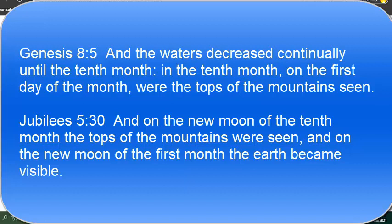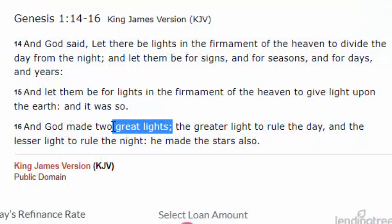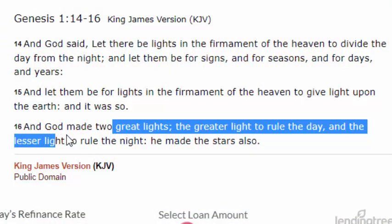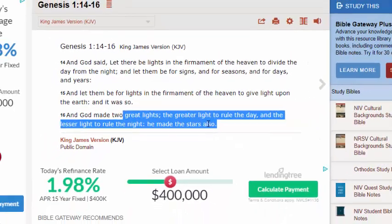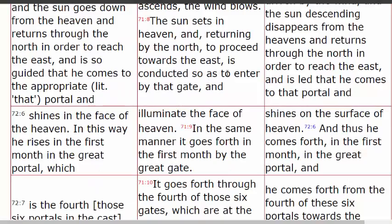That is the second law of the luminaries. You have the sun to regulate the day and the moon to regulate the month — the greater light and the lesser light. The only other element of the Father's timepiece is the stars.